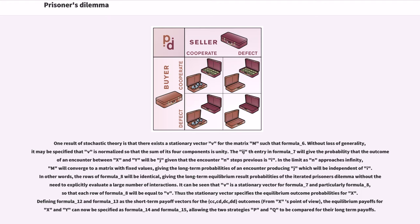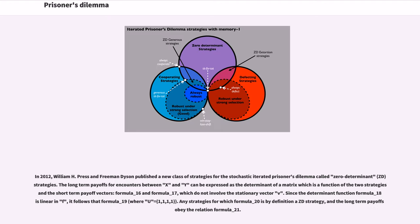In 2012, William H. Press and Freeman Dyson published a new class of strategies for the stochastic iterated prisoner's dilemma called zero-determinant strategies. The long-term payoffs for encounters between X and Y can be expressed as the determinant of a matrix which is a function of the two strategies and the short-term payoff vectors, and this does not involve the stationary vector V. Since the determinant function is linear in the payoff vector, it follows that any strategies satisfying a certain linear relation are by definition ZD strategies, and the long-term payoffs obey a corresponding linear relation.